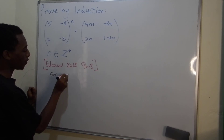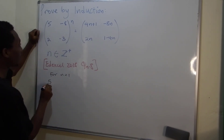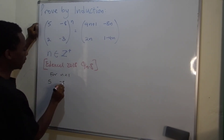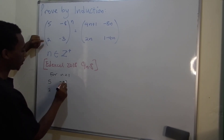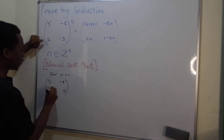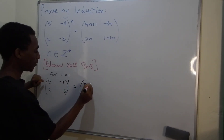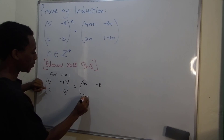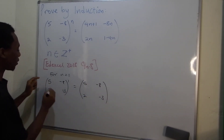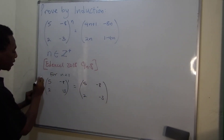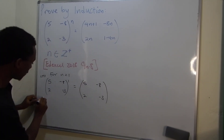For n equals 1, let's see what that is. So the matrix [5, -8, 2, -3] to the power 1 is just going to be the same matrix: 5, -8, 2, -3. So that's the left-hand side of the expression.